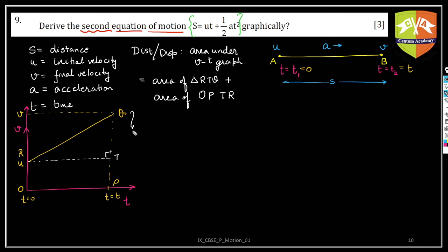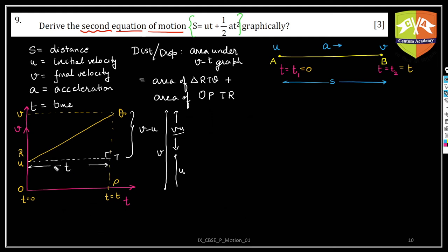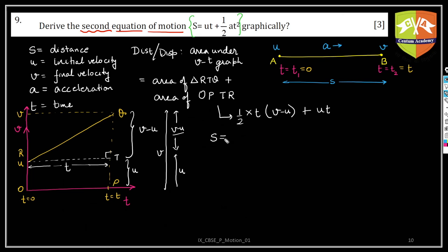For triangle RTQ, we need base and height. The height is v - u (since the total is v and the lower part is u), and the base along the t-axis is simply t. For rectangle OPRT, the height is u and the width is t, giving area u × t. So the displacement s = area of triangle RTQ + area of rectangle OPRT = ½ × t × (v - u) + u × t.